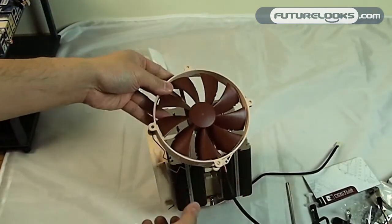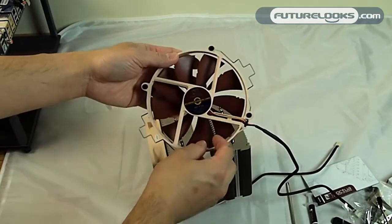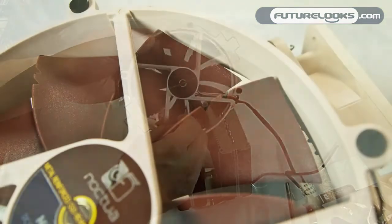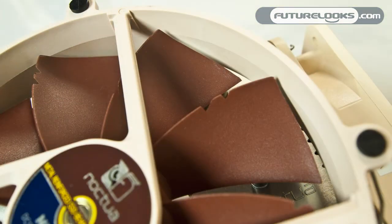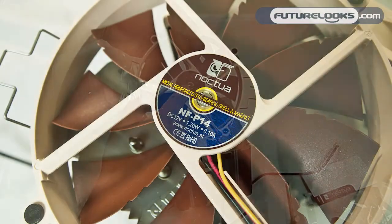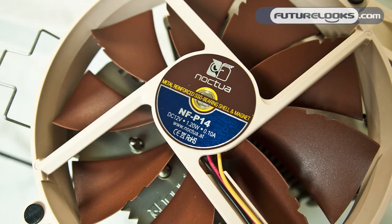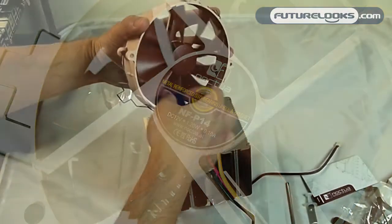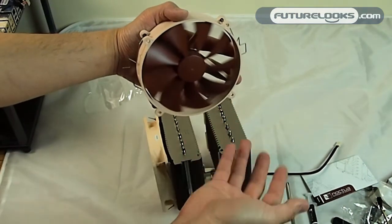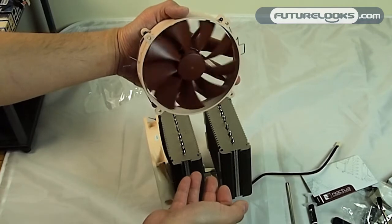While we have the fan off here, I should probably show you some of the unique profiling that Noctua has done to these fans. Here's some of the fins that create more turbulence. And of course they have a metal reinforced SSO bearing shell and magnet, which allows this to spin very quietly, but also very quickly. You can see that with just a little bit of a spin, it runs for quite some time.